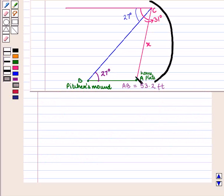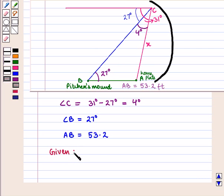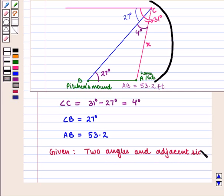So we have angle B equal to 27 degrees. Now C, A, B form a triangle. We can find angle C, which is given by 31 degrees minus 27 degrees, equal to 4 degrees. So angle C is 4 degrees. Now we know angle B, angle C, and side AB. So we are given two angles and the side adjacent to one of the angles, that is AAS.